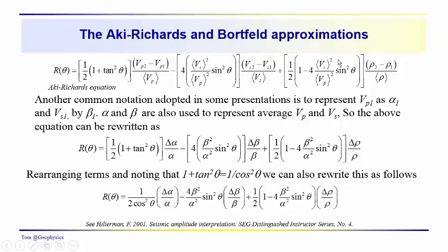The Aki-Richards formulation you'll find in different forms shown here. This is probably the most explicit form where you have the compressional wave velocities - in this case the sand and the shale, overlying shale, V1, V2 minus V1 over the average of the compressional wave velocities, and the twos would cancel out.